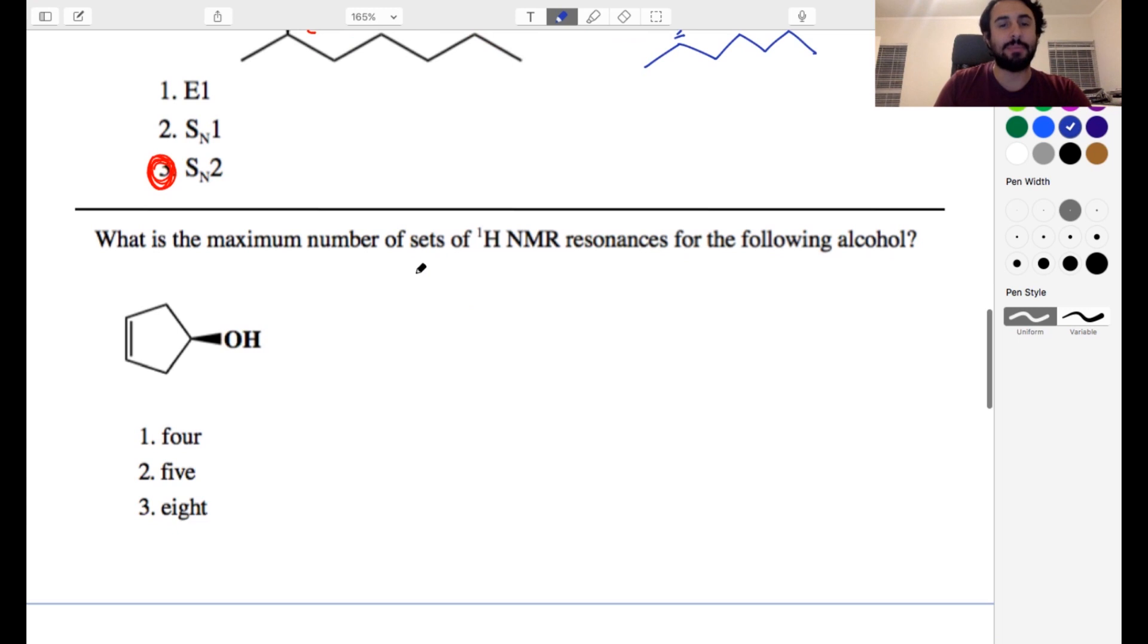Okay next, what is the maximum number of sets of proton NMR resonances for the following alcohol? So we got to know how many chemically inequivalent protons there are. So first of all let's go ahead and draw all of the protons. Let's make sure we have them all. So we have an implied hydrogen on the dash right there. We have two hydrogens here. We have two hydrogens here. We have one hydrogen there and we have one hydrogen there. So we've got two, four, six, eight protons to worry about. How many resonances are we going to get?